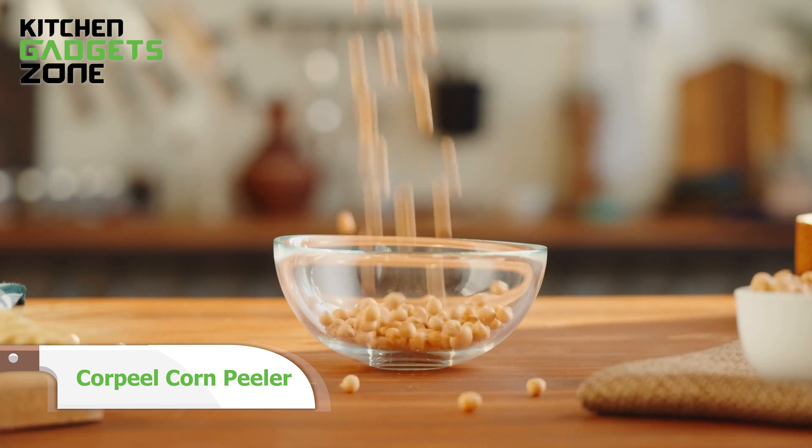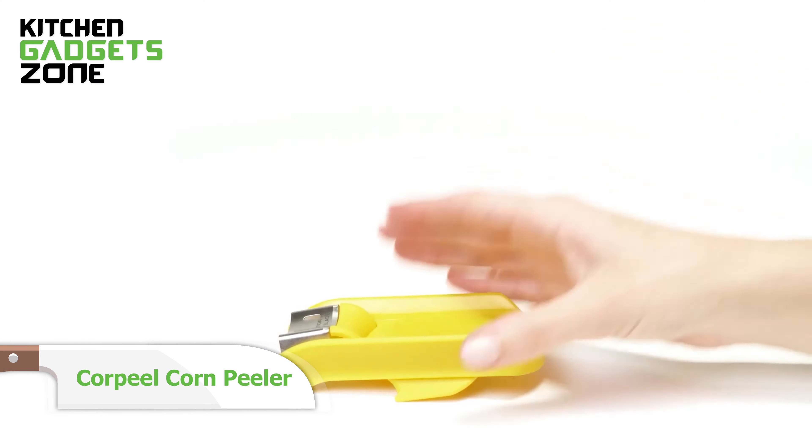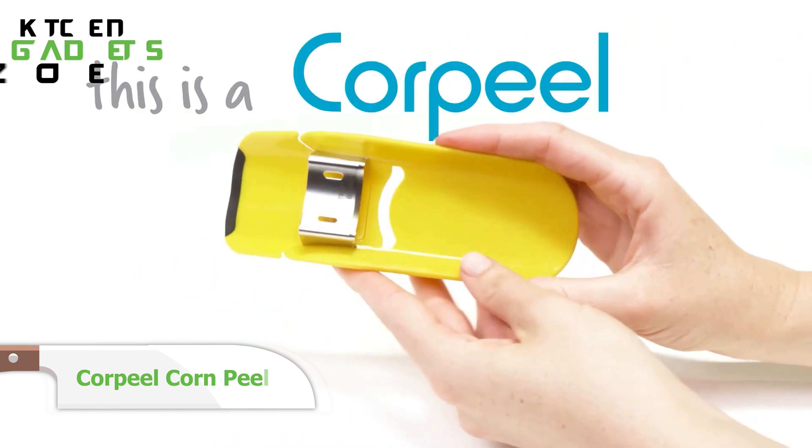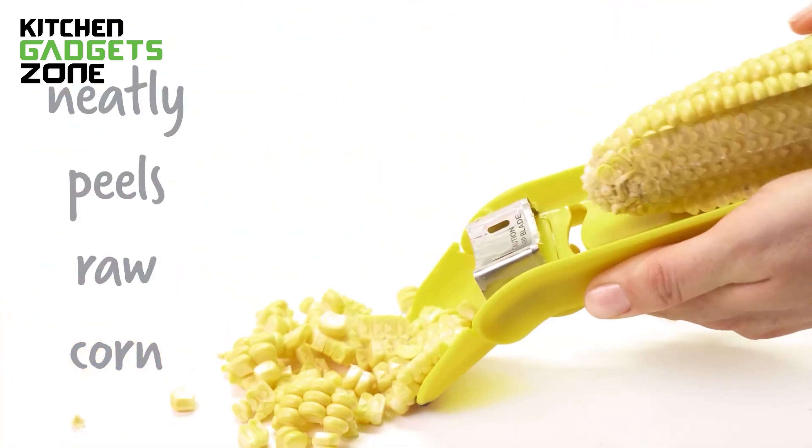In the kitchen, nothing beats the joy of fresh corn on the cob, but peeling those little green jackets off can be a real hassle. That's where the Corpeel Corn Peeler comes in. This nifty gadget makes peeling corn a breeze. Just glide it down the cob, and voila, perfectly stripped kernels without a mess.